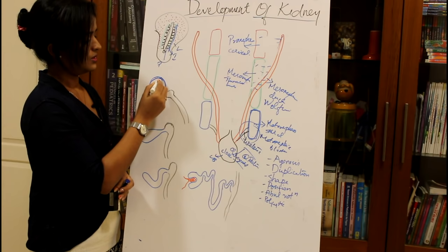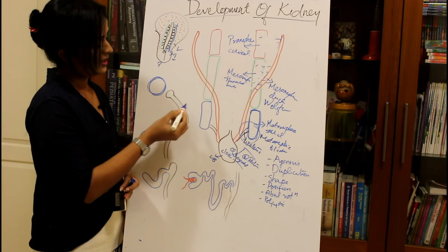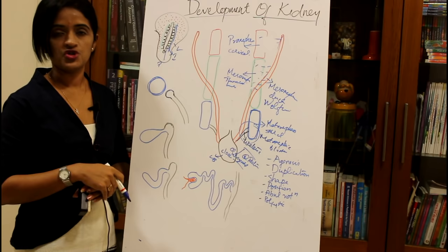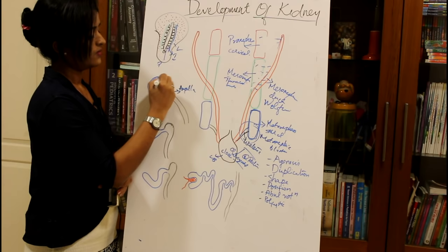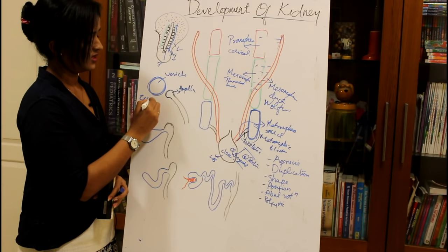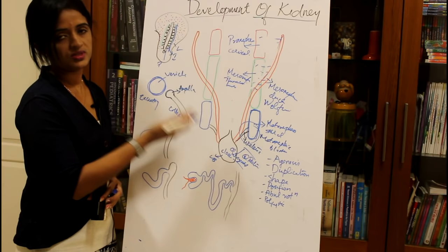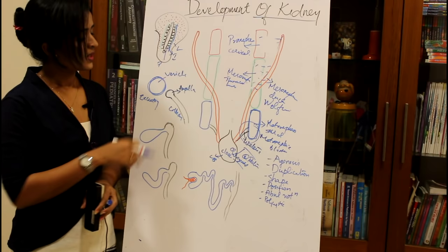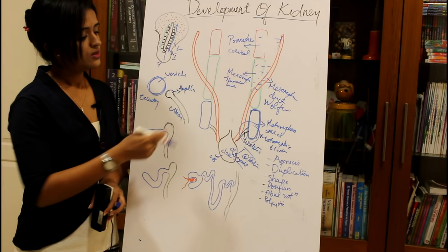The metanephros forms a vesicle called the metanephric vesicle. The ureteric bud has a distal dilated portion called the ampulla. The development of kidney can be discussed under two headings: the excretory portion, which includes the nephrons, and the collecting portion, which includes the collecting tubules, calices, major and minor calices, and the renal pelvis.